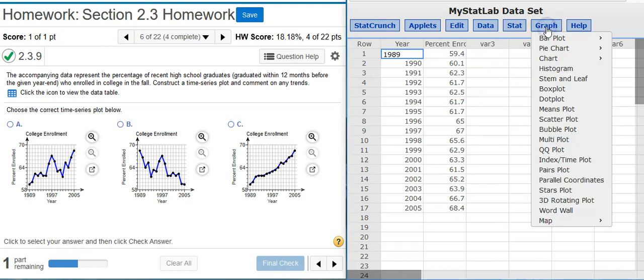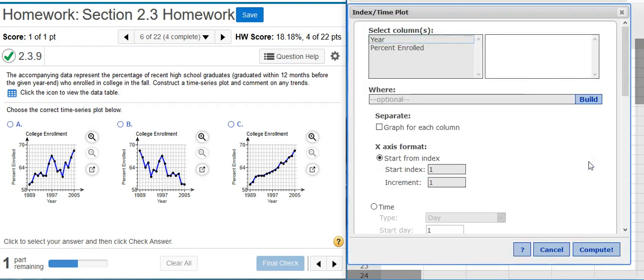I just go up to Graph, Index Time Plot. In the first area, I'm asked to select the columns that I want to graph. And this is what's represented on the y-axis.